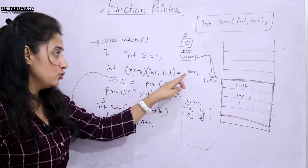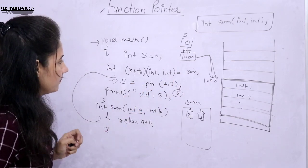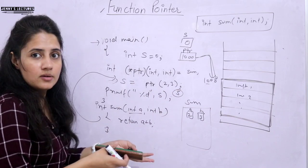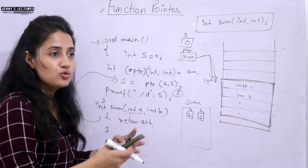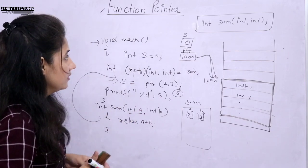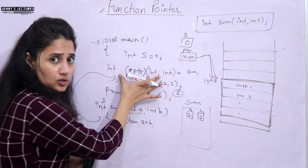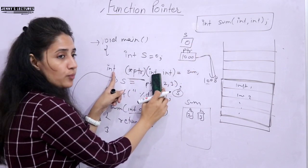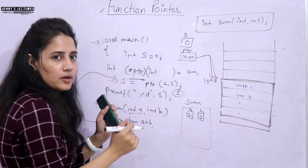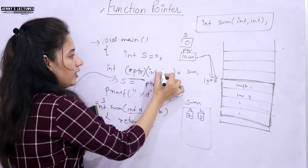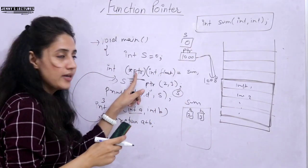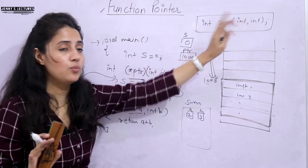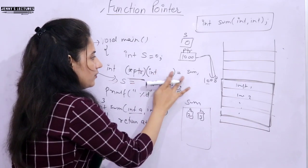This second form is very popular. The declaration of the function pointer depends on the prototype of the function — return type should be same, number and data types of arguments should be same. If you write one int here but the function takes two ints, it will give an error. If you write one int and one float but the function has both int, it will also give an error. This pointer cannot contain the address of that function. I will show you all these variations practically.